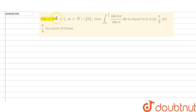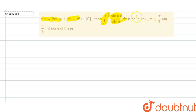In this question, we are given that if n is equal to 2m plus 1, where m belongs to natural numbers, then the value of the integral from 0 to π/2 of sin(nx)/sin(x) dx is equal to: π, π/2, π/4, or none of these.